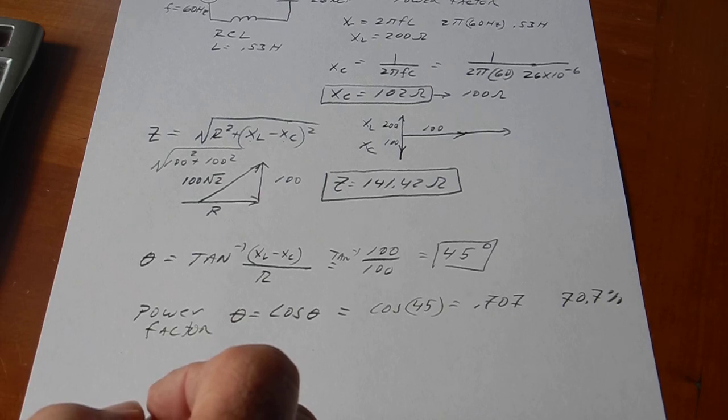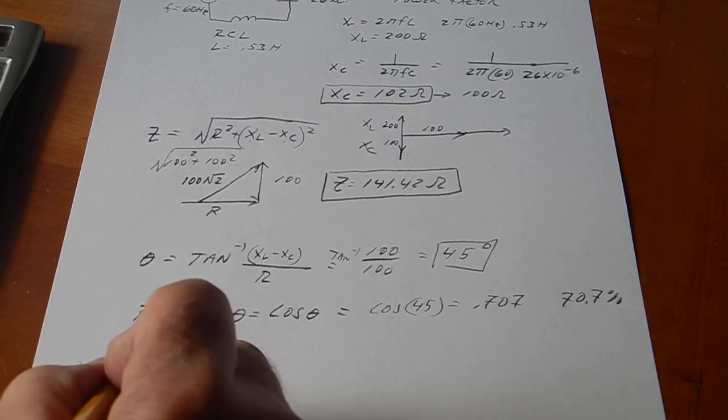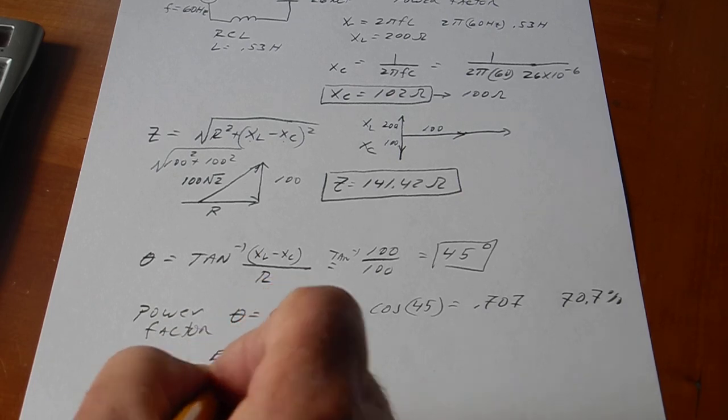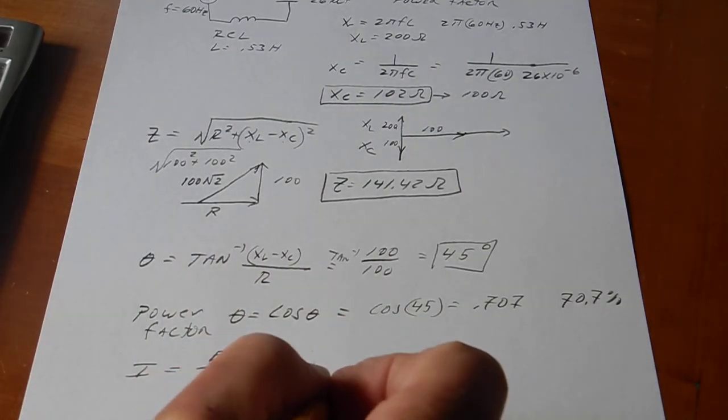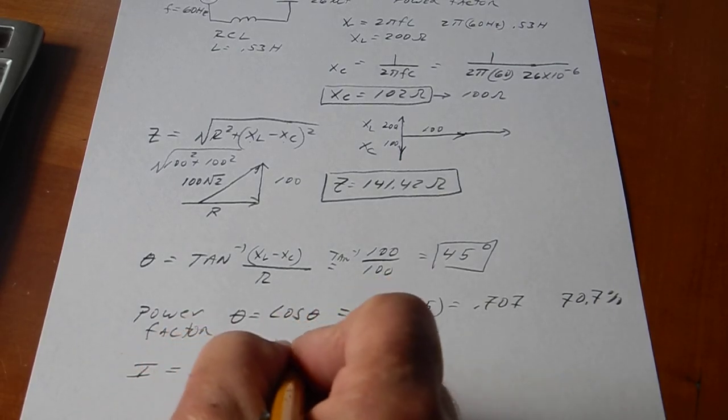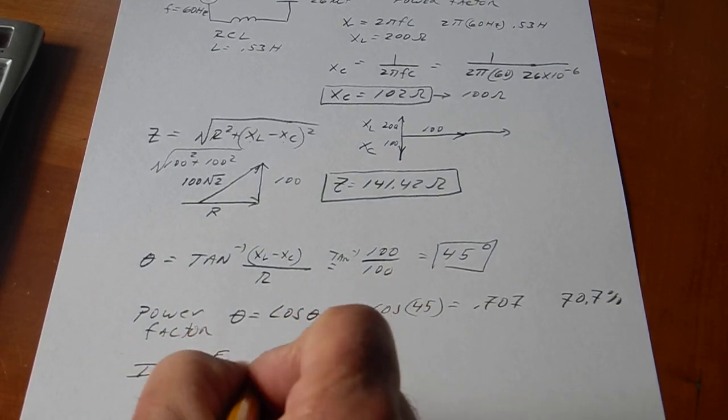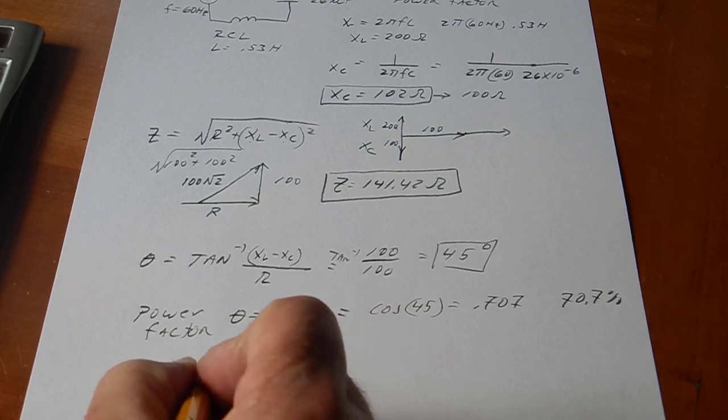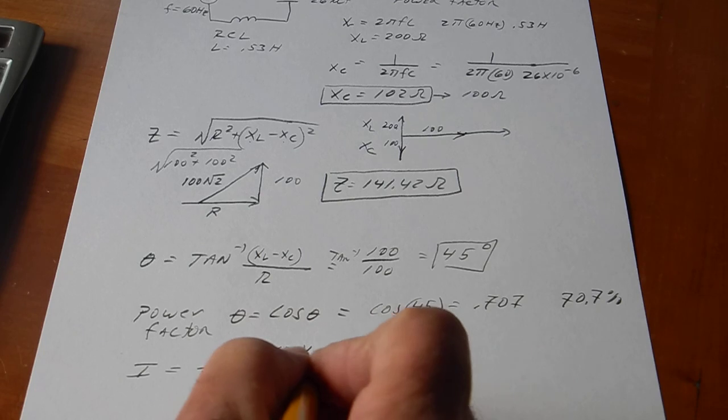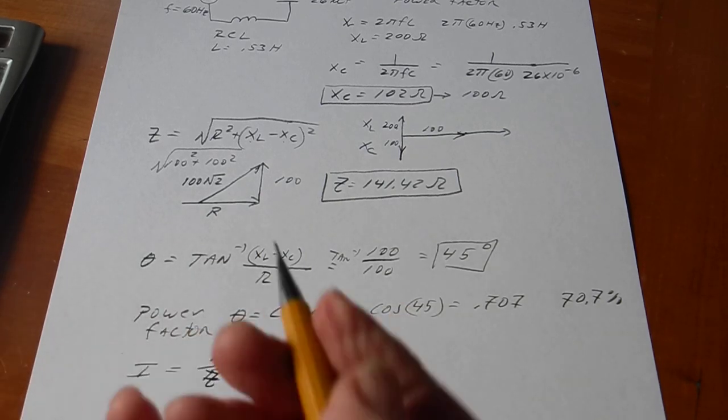And the next thing we could do, we didn't find current. So, I equals E over R. Hopefully, this is still in view of the camera. Let me check. Yeah, it kind of is. I equals E over R. And so, you have 100 volts divided by one, I should say E over Z, not E over R, 141.42. So, 100 divided by that gives me 0.707 amps.